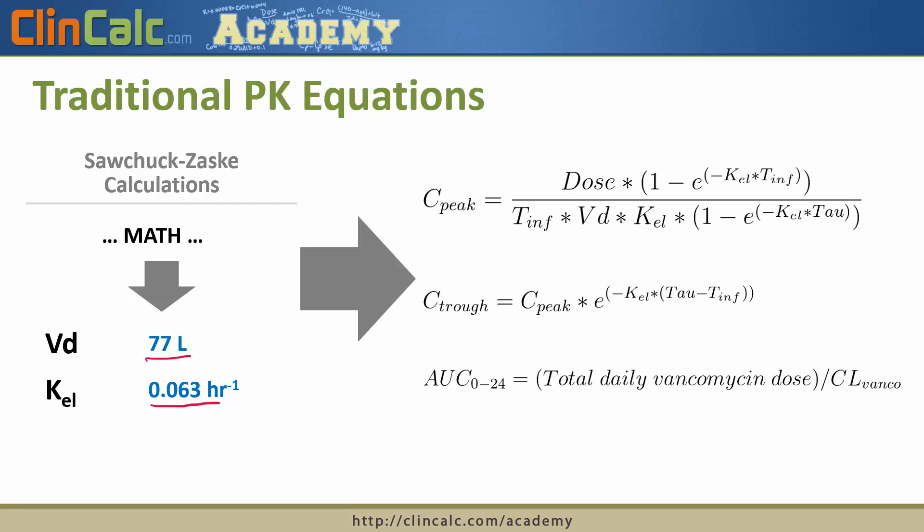And those equations include coming up with a peak level for a patient, a trough level for a patient, and an AUC for a patient with a given dose and dosing frequency or tau. So if we give a patient one gram IV every 12 hours, we can figure out what will their peak level be, what will their trough level be, and of course what their AUC will be and whether that dose is appropriate based on what our pharmacokinetic targets for the patient are.